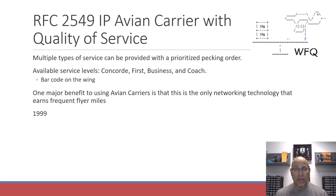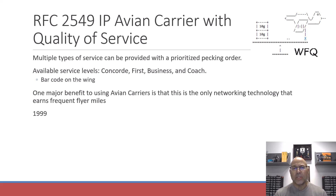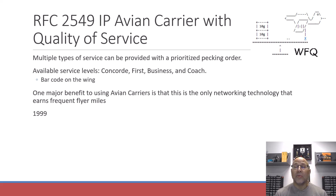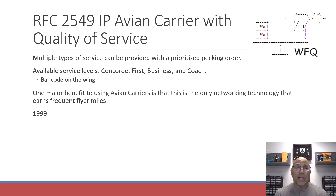RFC 2549 introduces Avian Carrier service with quality of service. There are lots of service levels available depending on the pecking order. A couple noted in the RFC: Concord, First Class Business, and of course Coach — determined by a barcode on the Avian Carrier wing. One major benefit is that it's the only networking technology that gives you frequent flyer miles. This RFC came about in 1999, about a decade after the original Avian Carrier RFC.